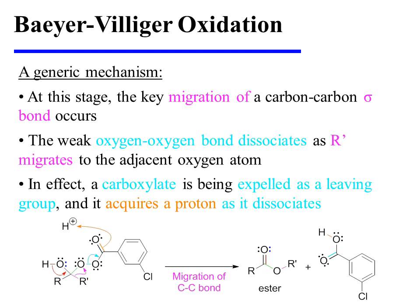At this point in the mechanism, the key migration of a carbon-carbon sigma bond occurs. The weak oxygen-oxygen bond of the peroxy acid dissociates as R' migrates to the adjacent oxygen atom. A carboxylate is being expelled as a leaving group, and it acquires a proton as it dissociates.